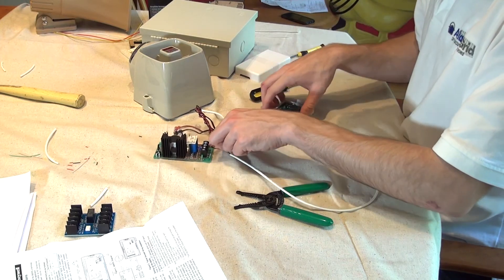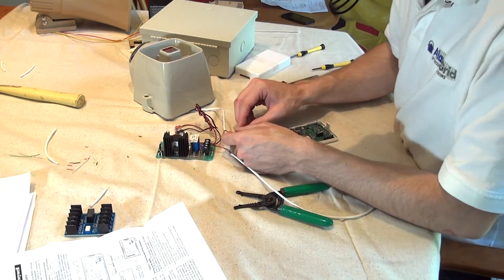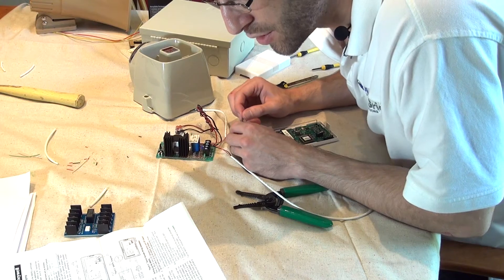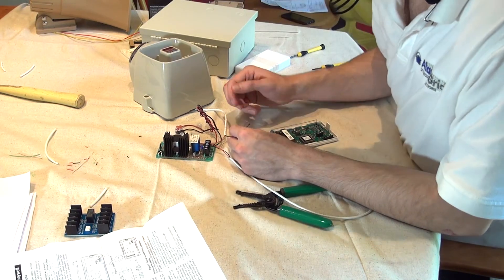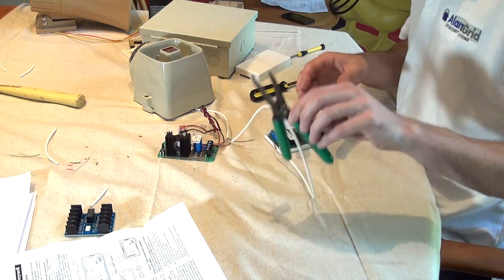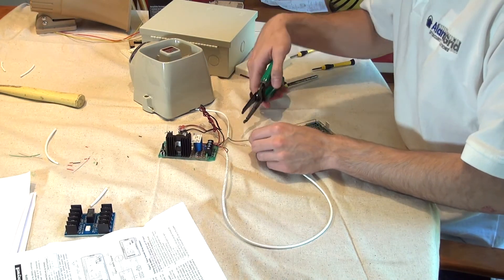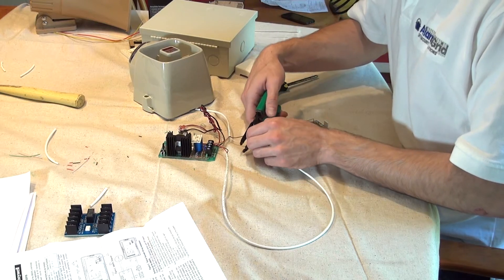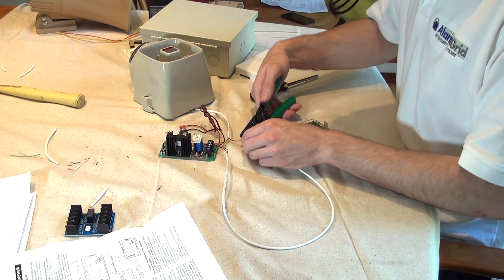Now our negative is going to go to our relay common terminal. I have a little varying length here, I'm just going to trim this black down a little bit, restrip the end.